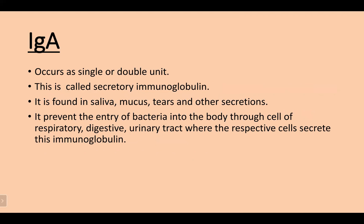IgA occurs as a single or double unit and is called the secretory immunoglobulin. It is found in saliva, mucus, tears, and other secretions. It prevents the entry of bacteria into the body through cells of the respiratory, digestive, and urinary tracts where the respective cells secrete this immunoglobulin.